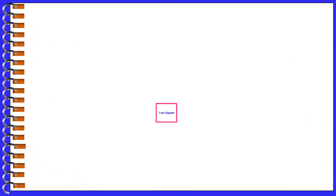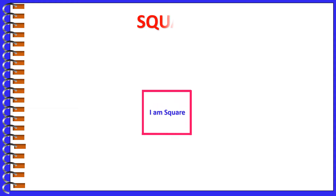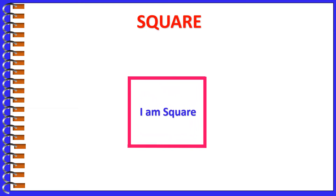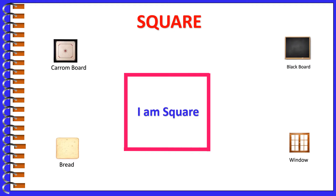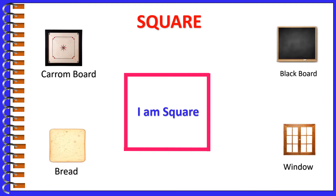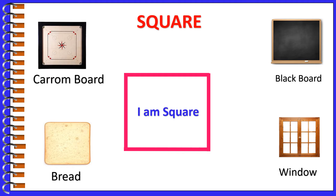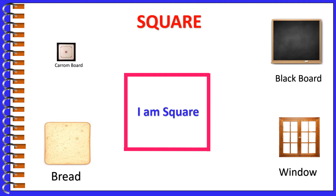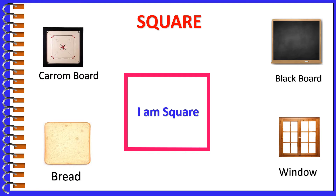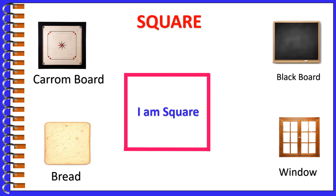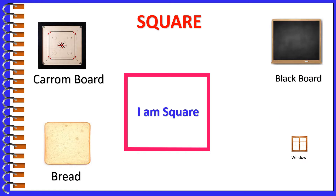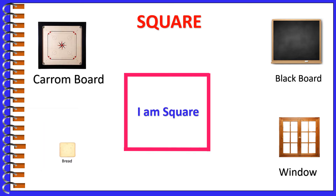I am square. Look at the objects which are in square shape. Chip, Carrom board, Blackboard, Window, Bread.